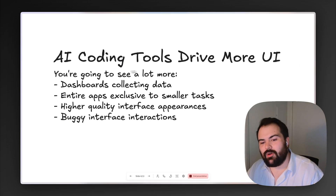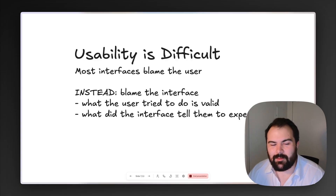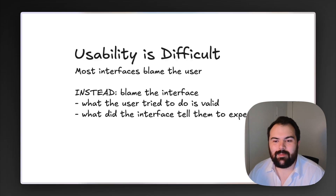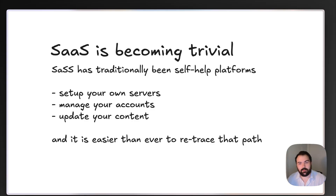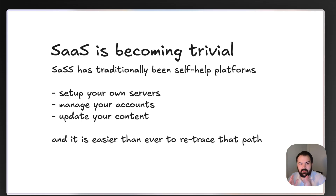As we see these coding tools drive more and more UI, we're going to see more usability challenges because there's not a lot of thought put into how people are using these tools. If these tools can help you build UI quickly and you keep usability in mind, assuming we have more non-technical folks who may spot usability issues more quickly, SaaS is becoming kind of trivial. Being able to build dashboards for servers, account management, and content updates — these traditional paths of building a self-help platform have become a lot easier. SaaS is becoming trivialized, with a downhill slope toward building software service platforms.